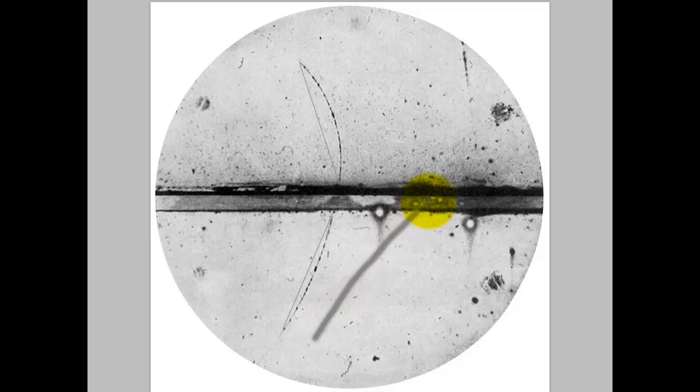So an electron coming from the same side and same direction would go like this. The curvature is not entirely correct, but the direction of the curvature is correct. So it would bend the other way because this one is negatively charged and this one is positively charged.